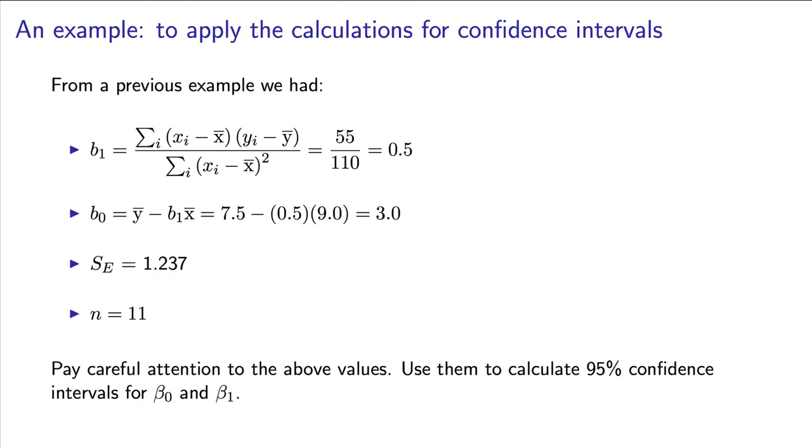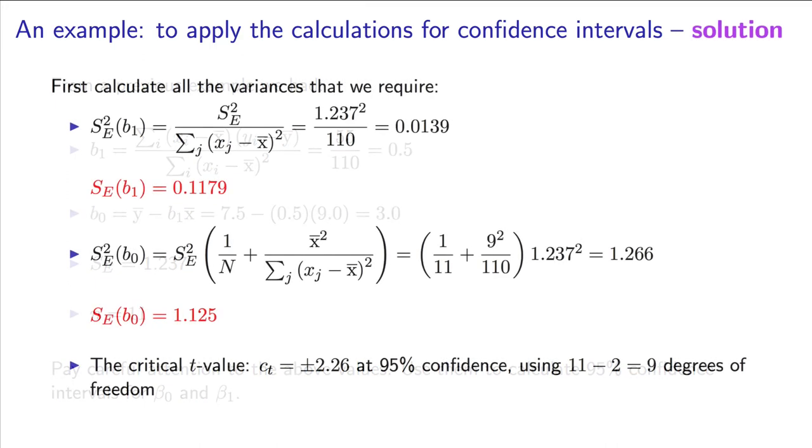Now it's time for an example to use these equations. I'd like you to use these calculated values of b0, b1, and the standard errors. Pause the video and plug in these values to calculate the lower bound and upper bound for the two confidence intervals. Do your values agree with mine, shown here on the screen? Particularly the values shown in red.